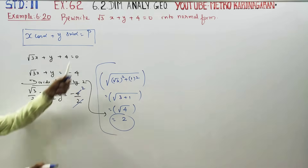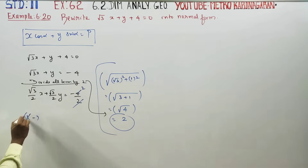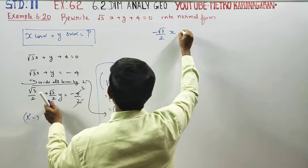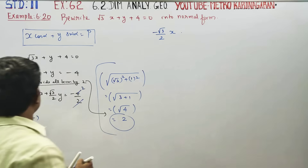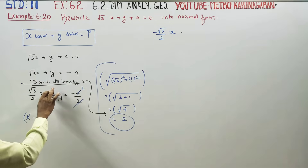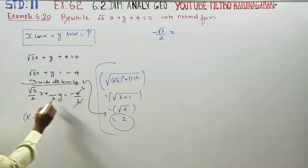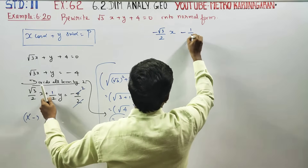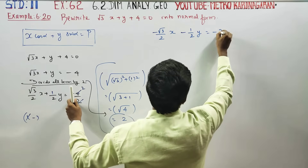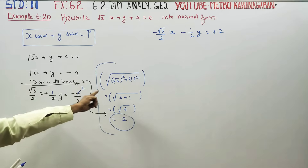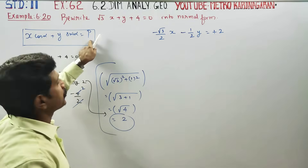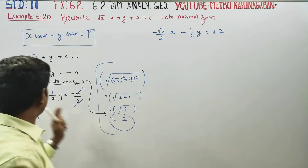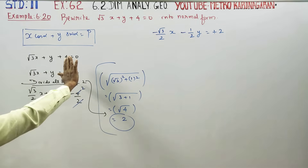After dividing, the right-hand side is −2. But p is the distance from the origin, so p is always positive. That's why we multiply through by −1, making the full equation negative on the left side, giving a positive p = 2.